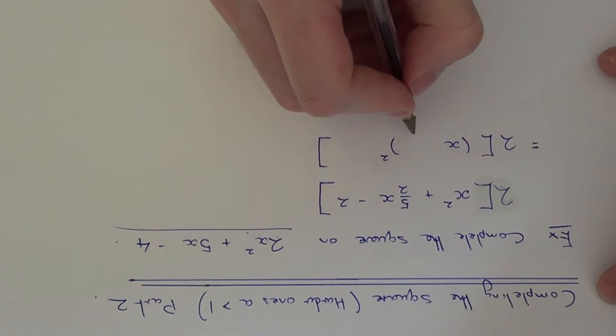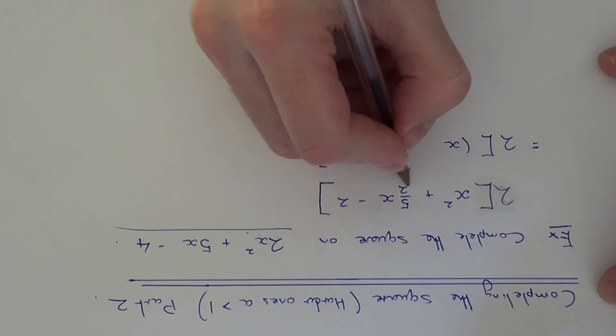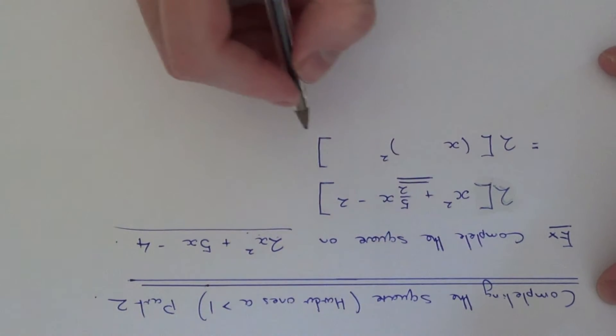So to get p then, this is the value of p here, you have to half the number before x.